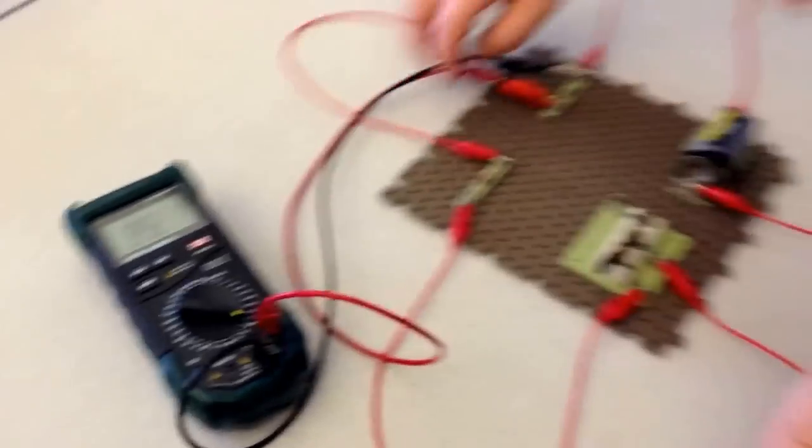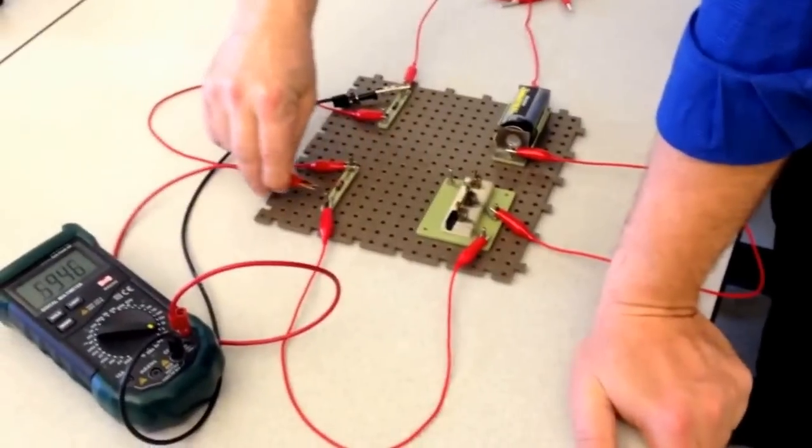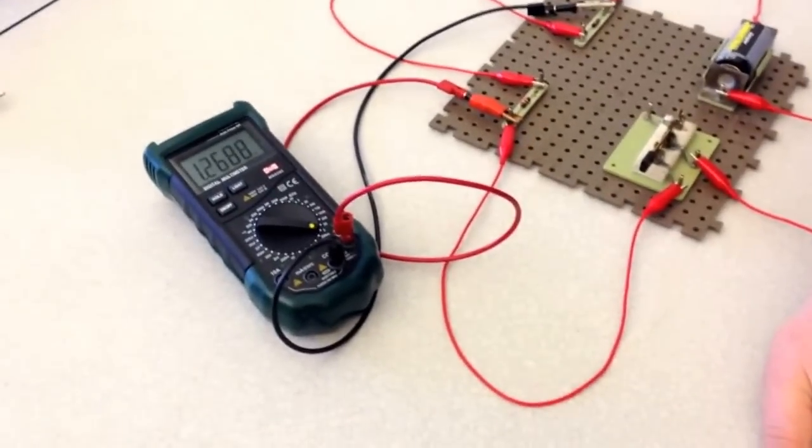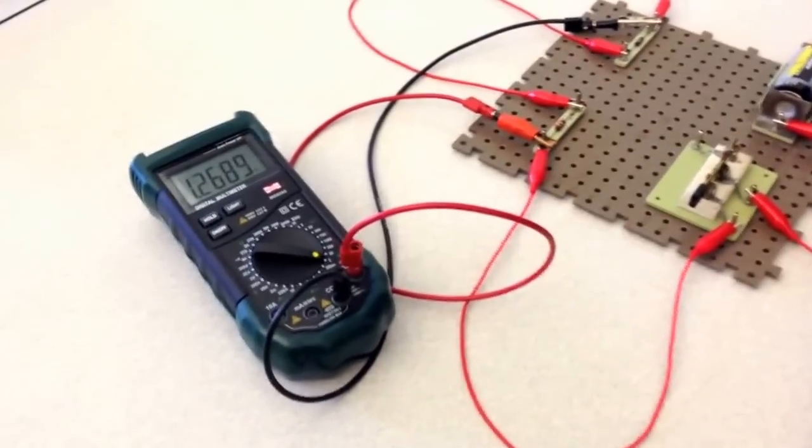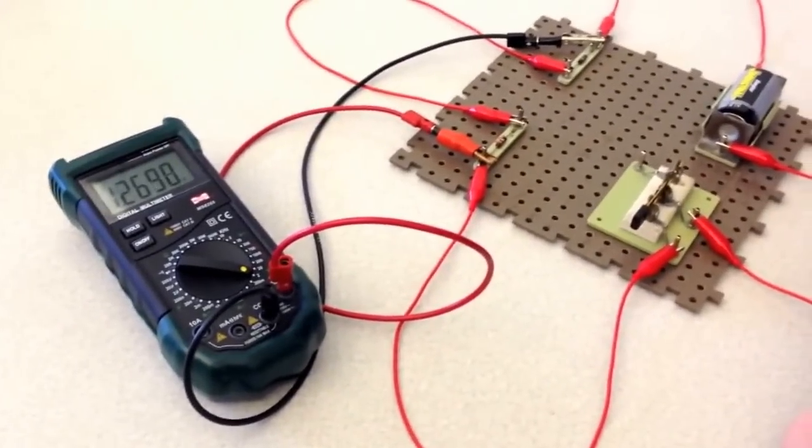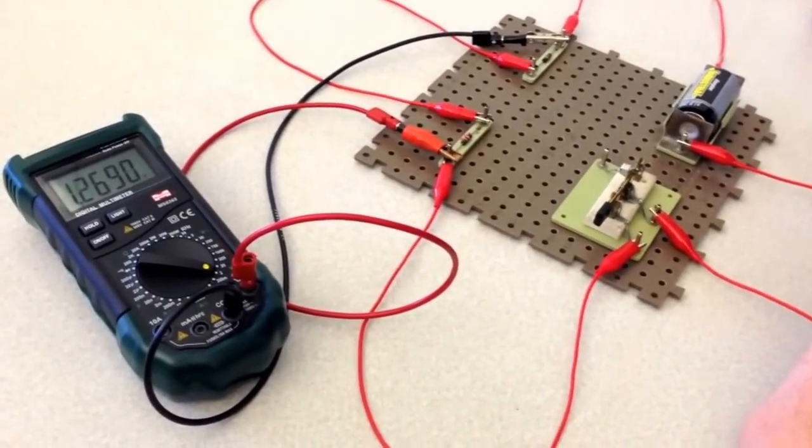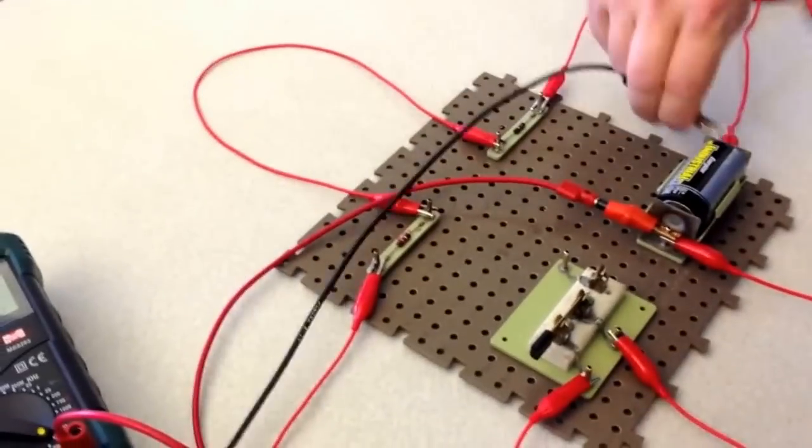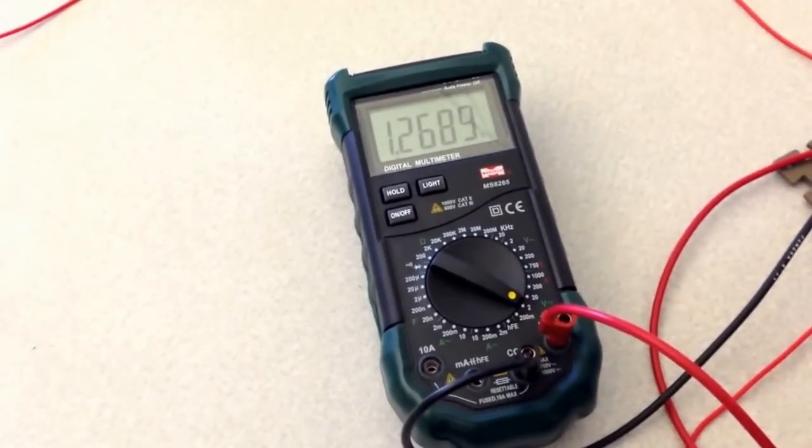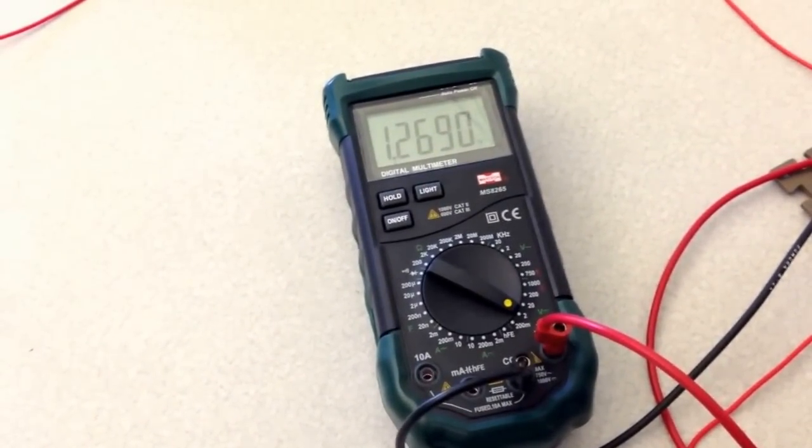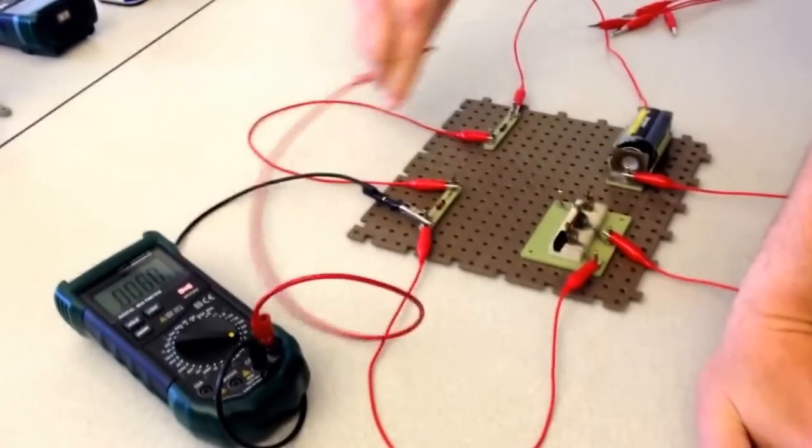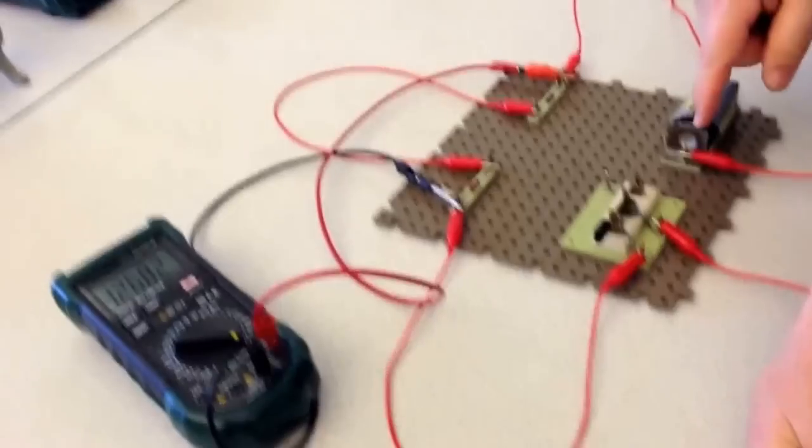And if we connect our voltmeter across both R1 and R2, we see that the voltage is approximately 1.26 or 1.27 volts. This should be the voltage of the battery. Now, why, if we connect it across our two resistors, is it equal to the voltage of the battery?